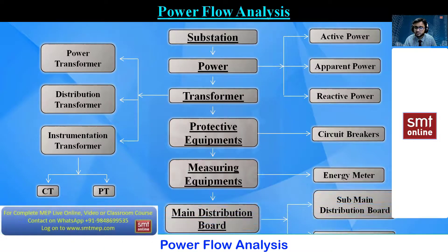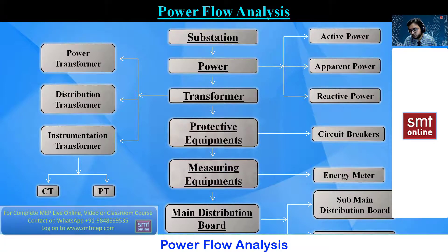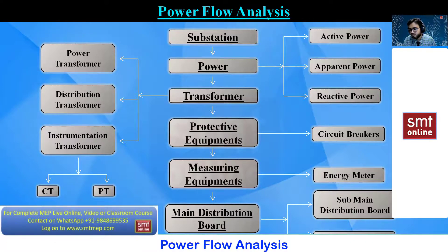The supply then comes to your distribution board. Based on the type of project, this could be a main distribution board (MDB), sub-main distribution board, or a distribution board. This is the complete schematic flow of power — how we get the supply to our lighting switchboards to run electronic gadgets, lights, fans, and other basic things. I hope it's very clear.